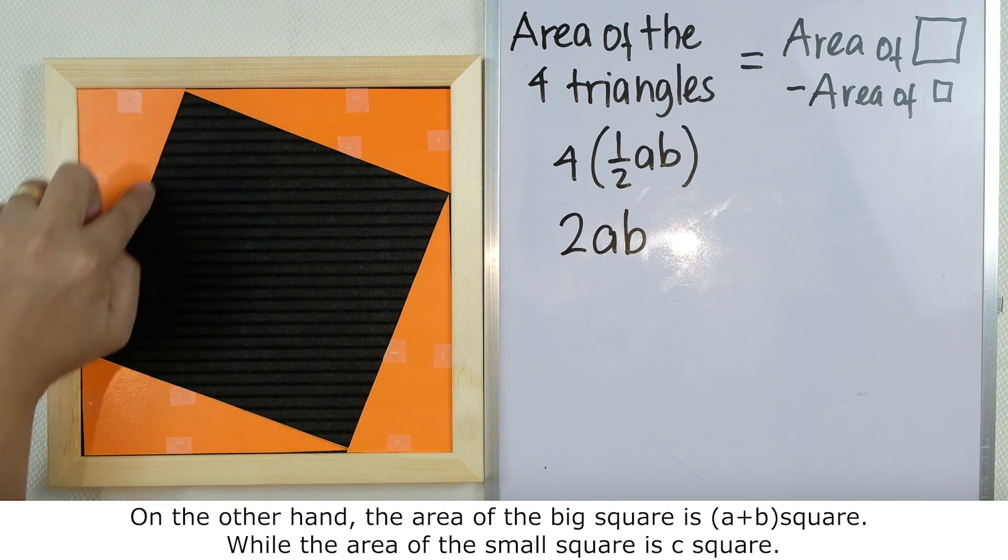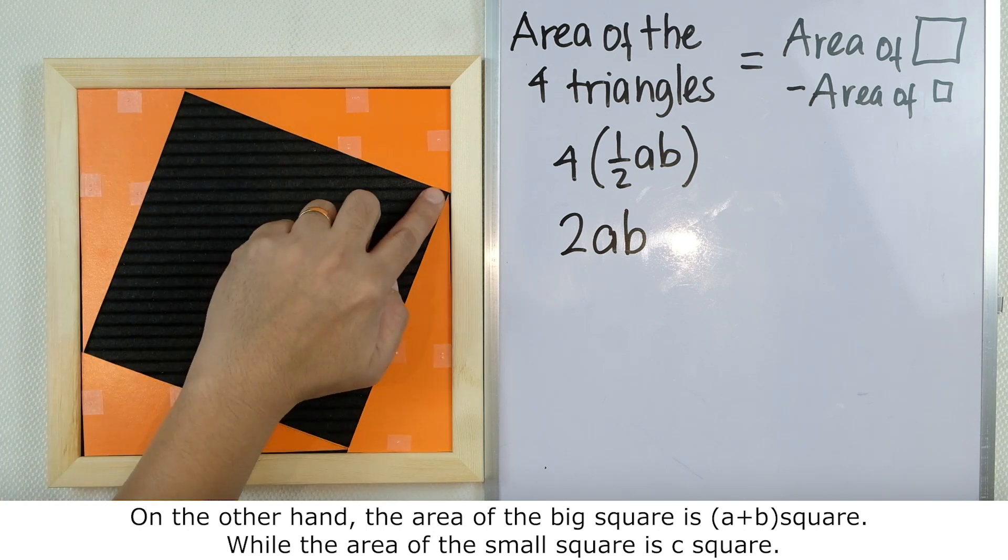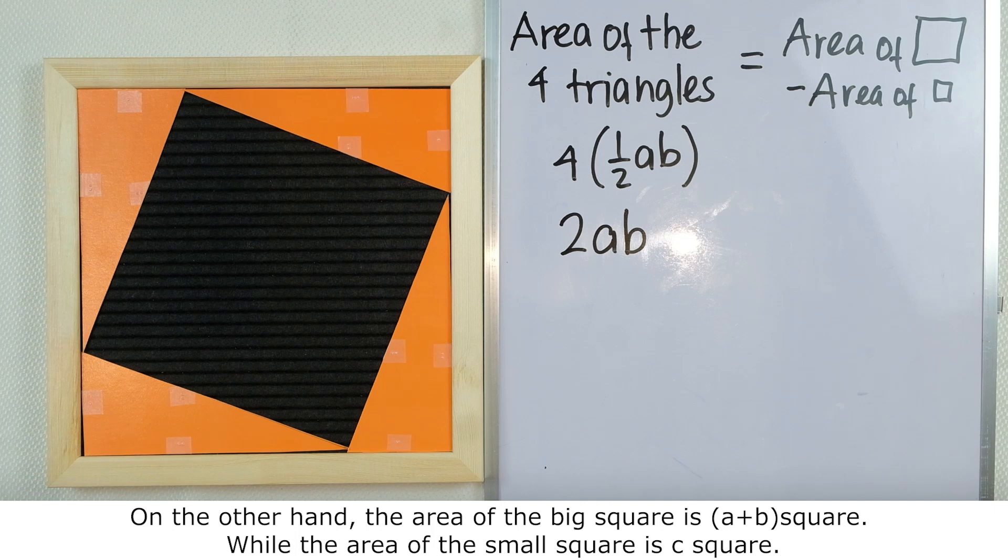While the small square has an area of c² because this is c.